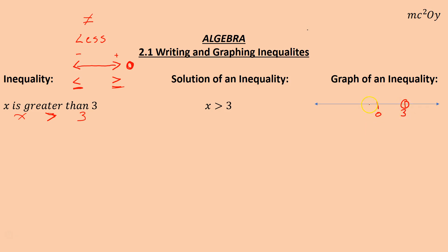We have an open circle at 3 because 3 cannot satisfy this — it cannot be part of our solution set. If I put 3 in, 3 is not greater than 3 — that's not a true statement, so 3 cannot be included. Now try 0: 0 is greater than 3 — that is also false. That means all of my solutions lie to the other side of 3. For instance, if I test 4: 4 is greater than 3 — that is true, and 4 is over on the right side.